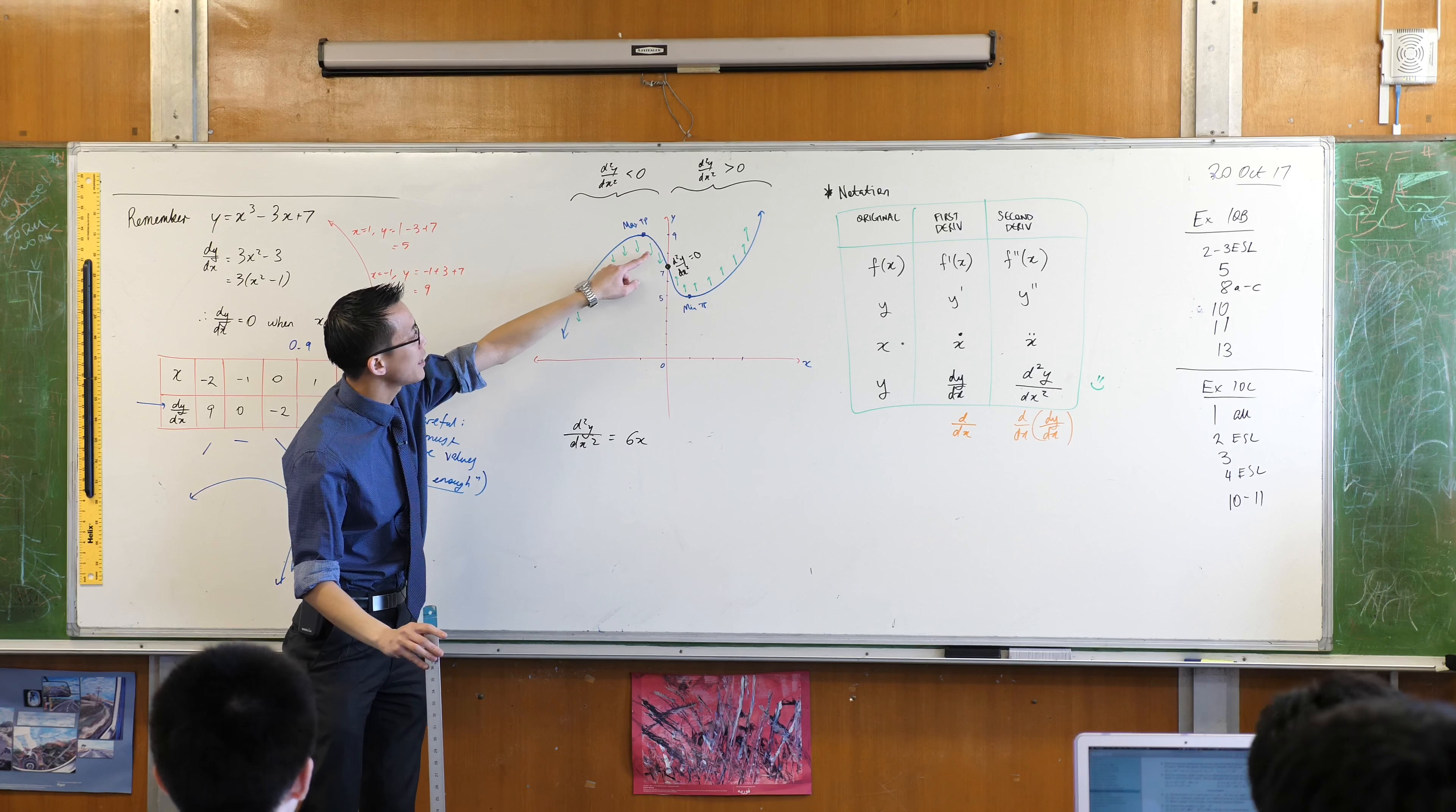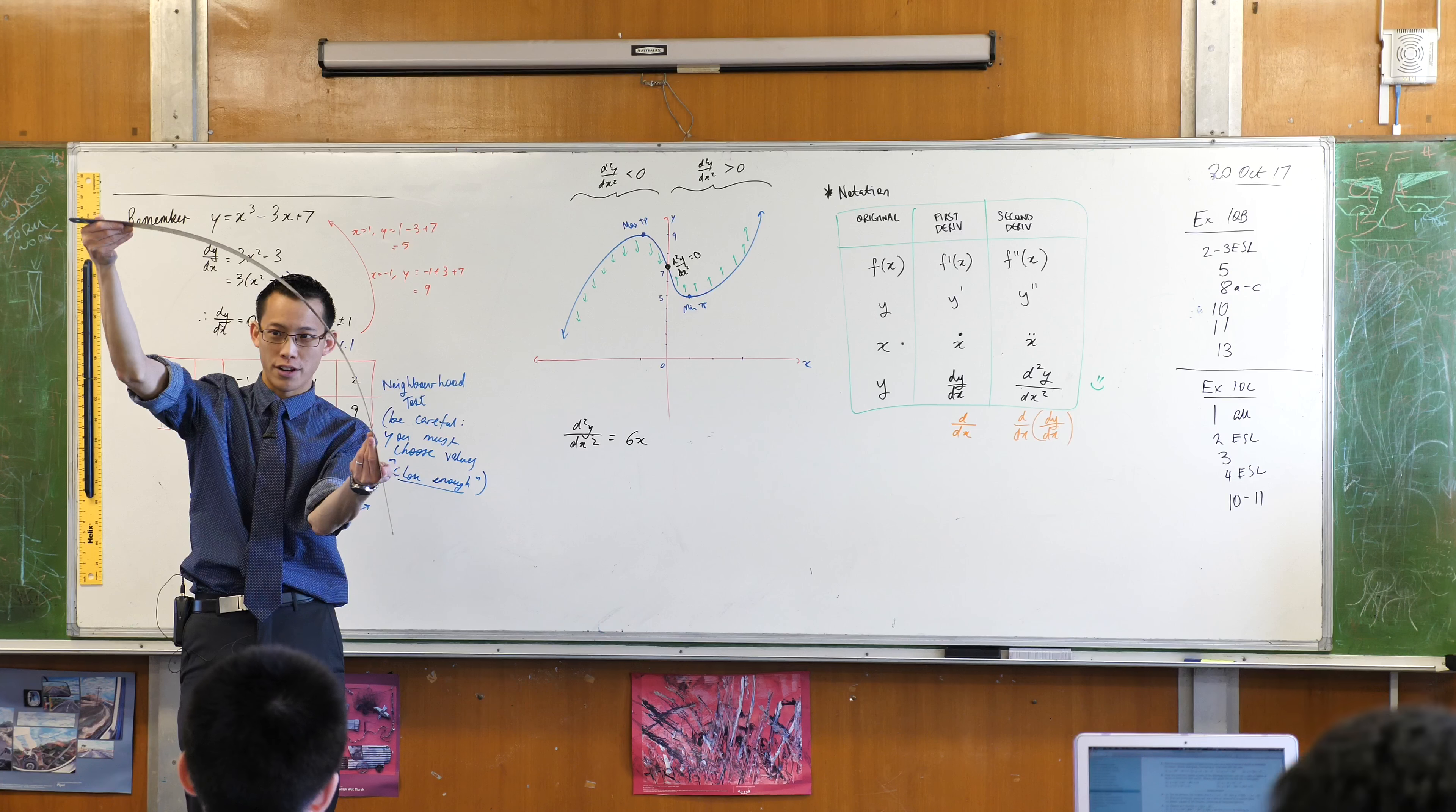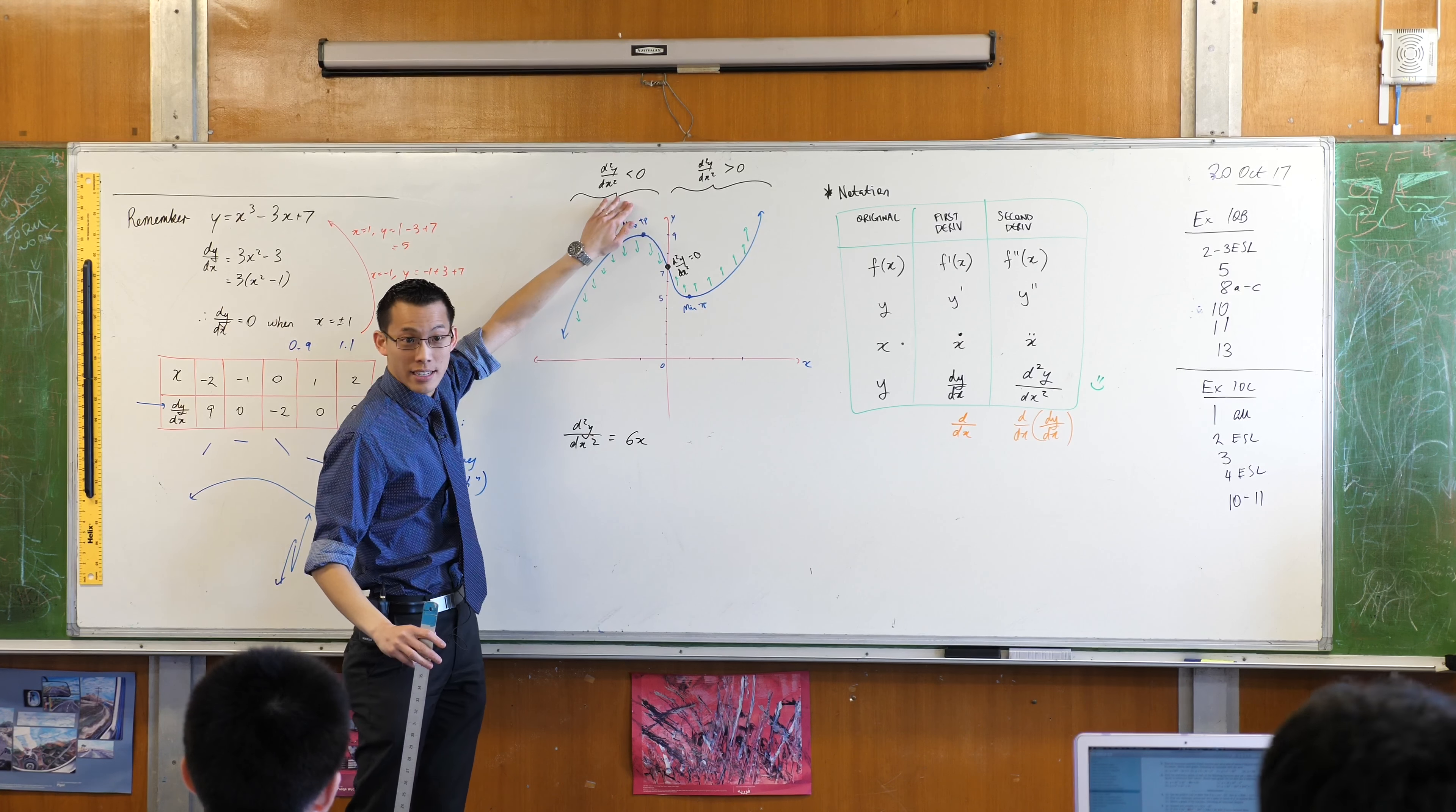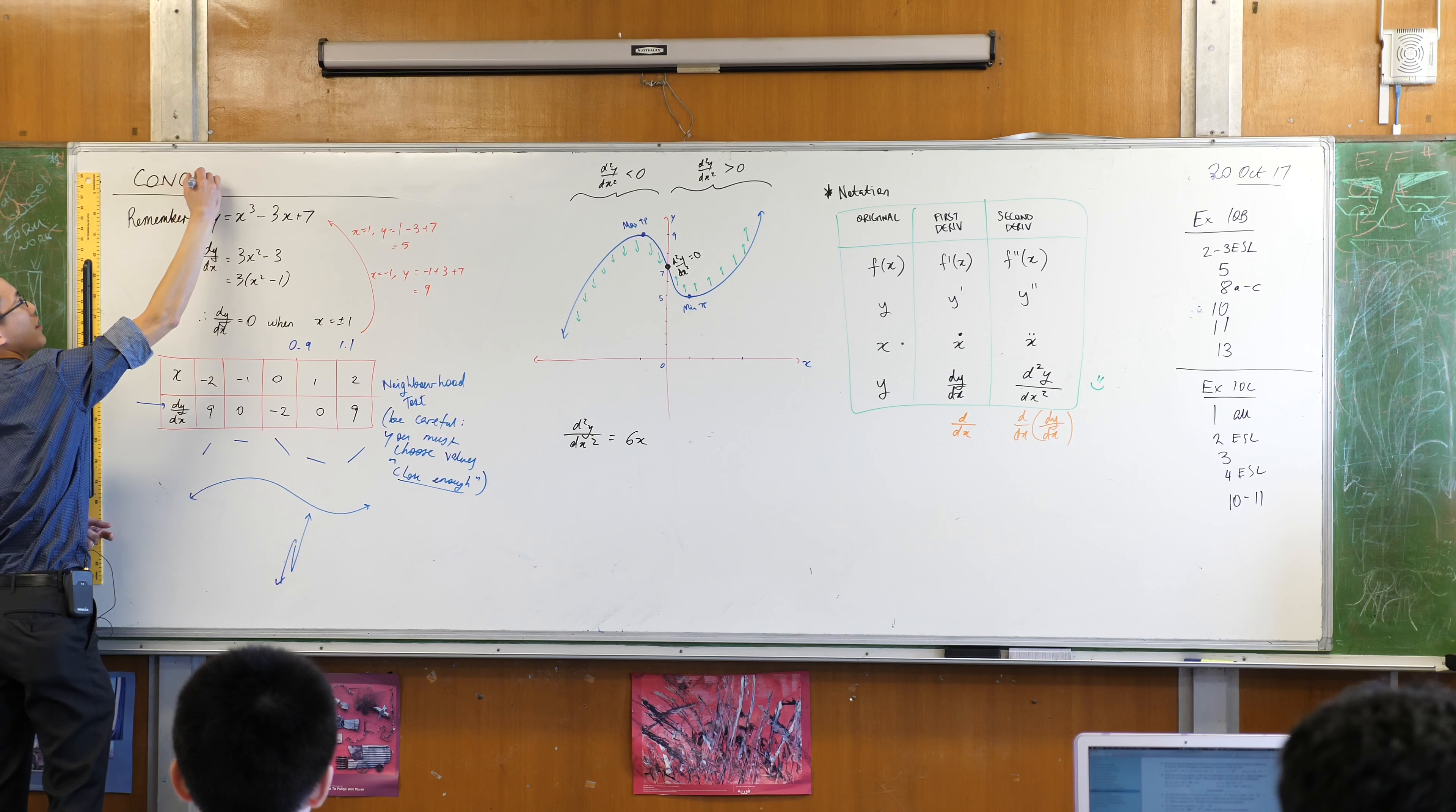So in between here and here, while the gradient is still negative, it's still going down, okay? It's going down in different ways. And that's what this thing is telling us, okay? Our name for this feature, you can make your heading now, is concavity.